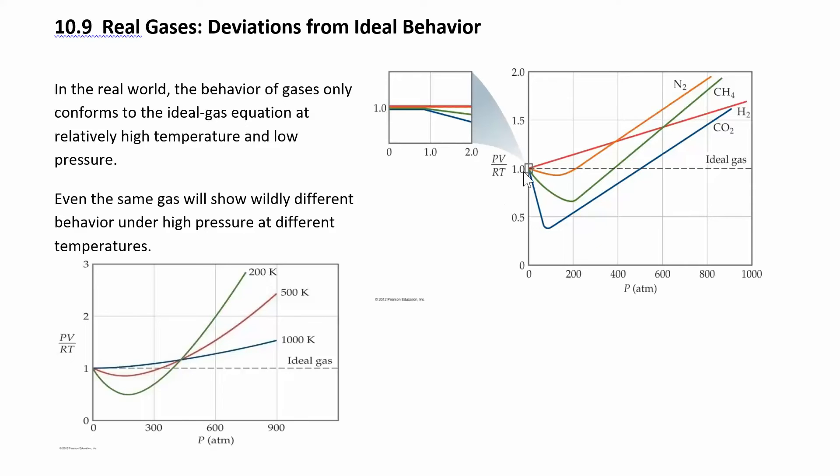If we solve the ideal gas law for n, PV over RT, if this was an ideal gas then this should equal 1, and that's what we have on this graph here.